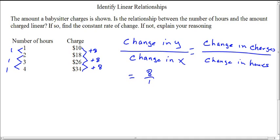So since that is the case, we can say that this is a linear relationship. And we say that it is because we have a constant rate of change.